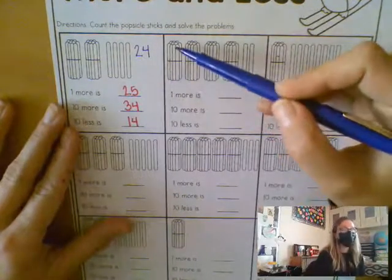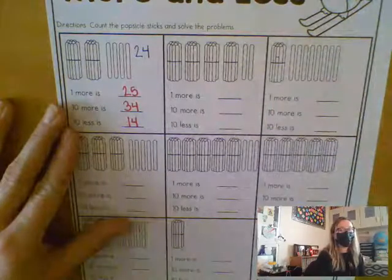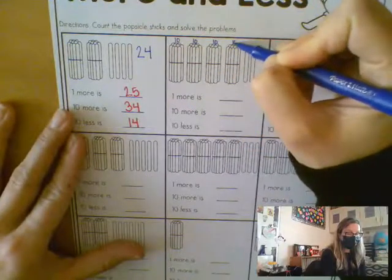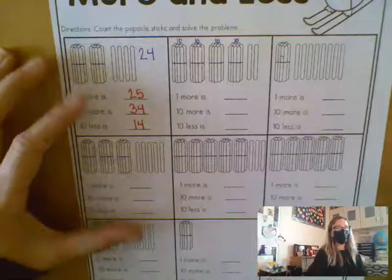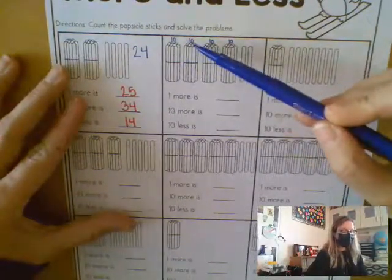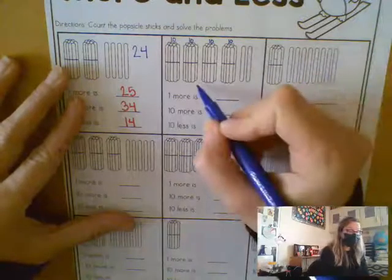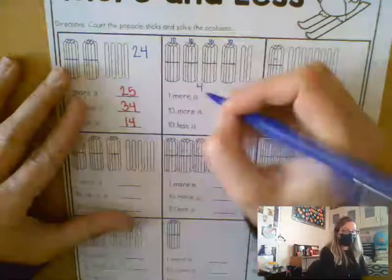So Brooklyn, each one of these bundles has how many? 10 in a bundle, right? So this is 10, this is 10, this is 10, and this is 10. So how many is four 10s, Brooklyn? Count by 10s. 10, 20, 30, 40. So we have 40 in tens, but how many ones do we have? So we have 40, 41, 42. All right, Mateo, we have 42 Popsicle sticks. Do you see that?